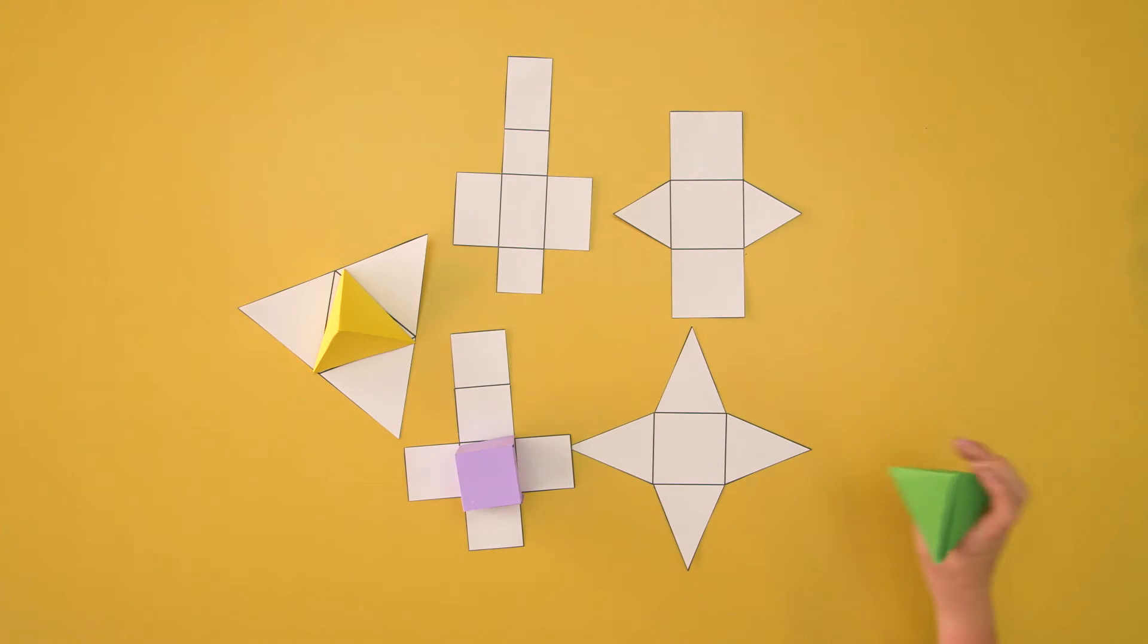This shape is made up of four triangles and one square as its base, and it's a pyramid. It matches up with this net.